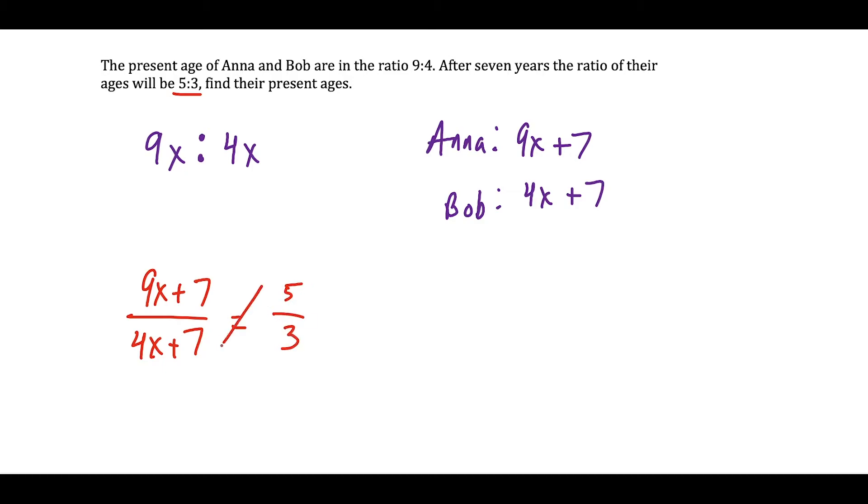Now to solve this resulting equation, we could just cross multiply. We would have 3 times 9x plus 7 is equal to 5 times 4x plus 7. And now we just solve this equation.